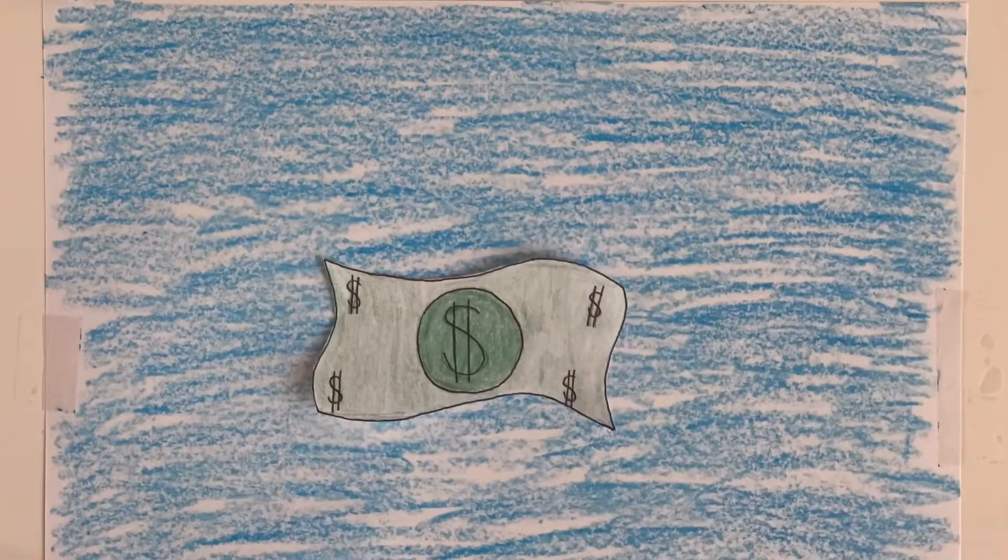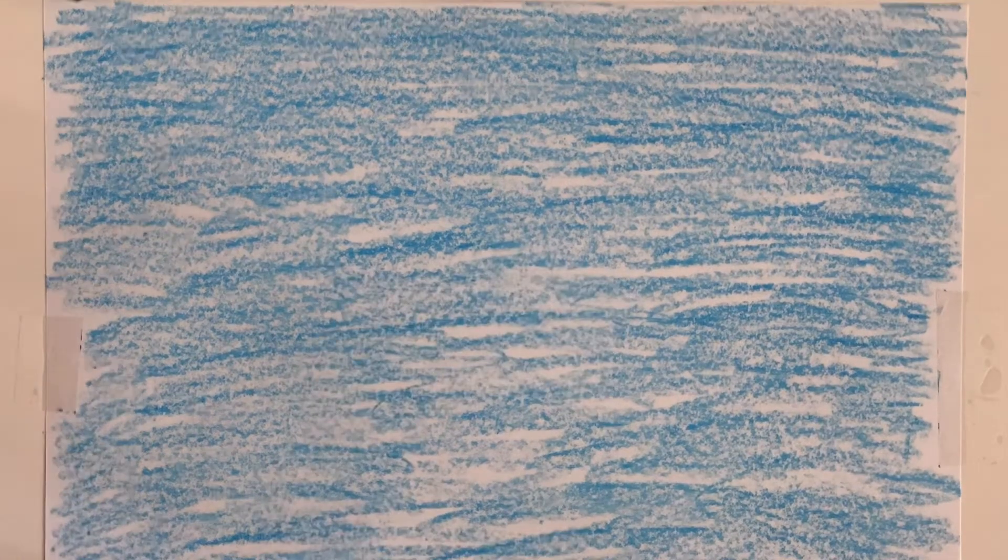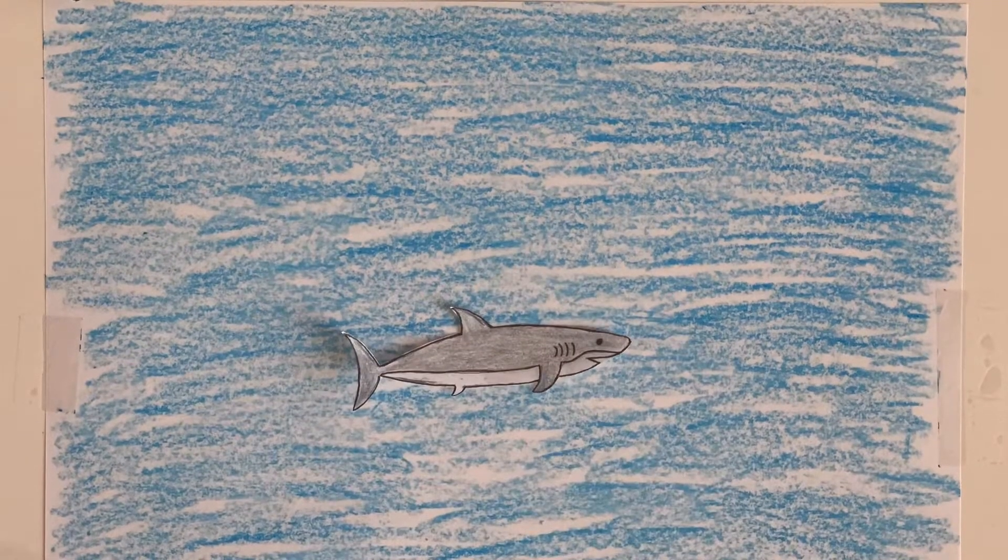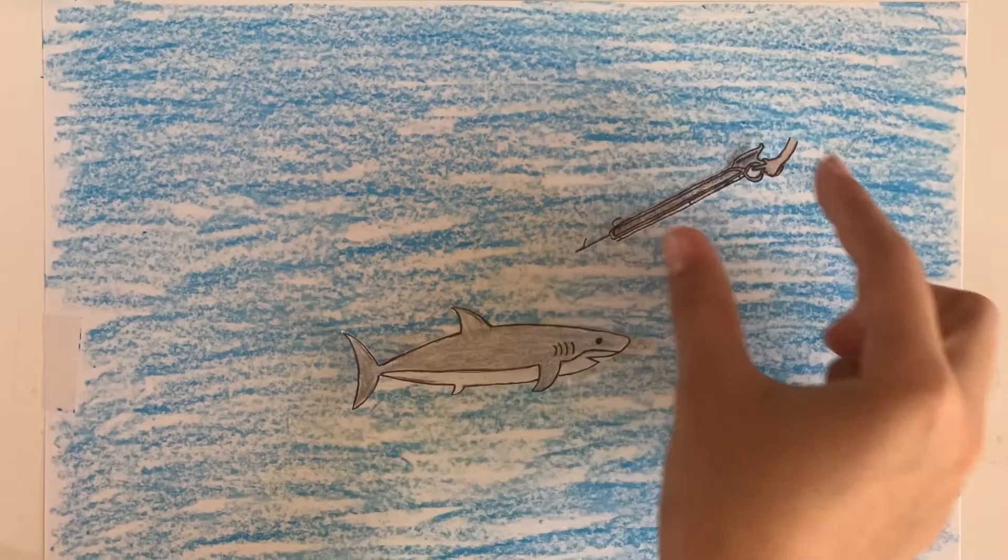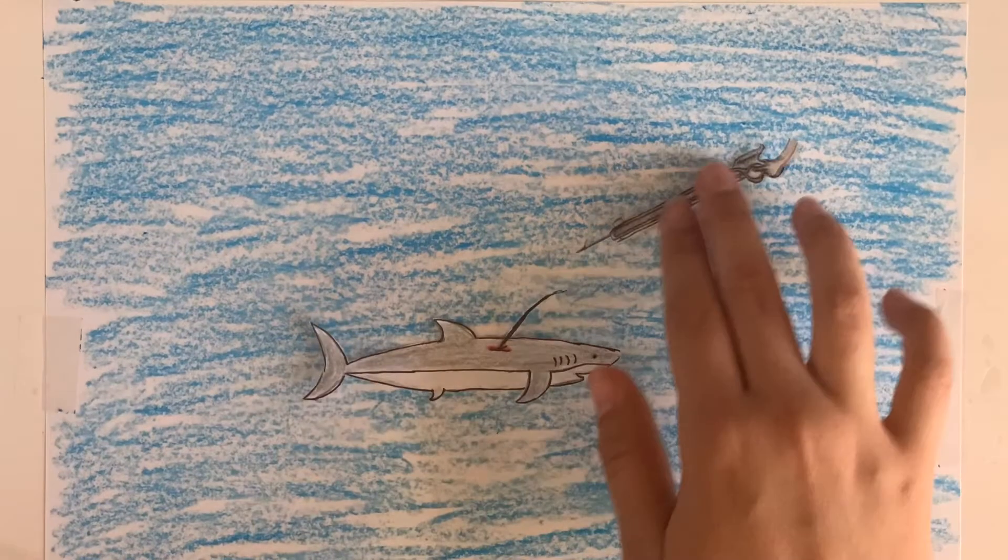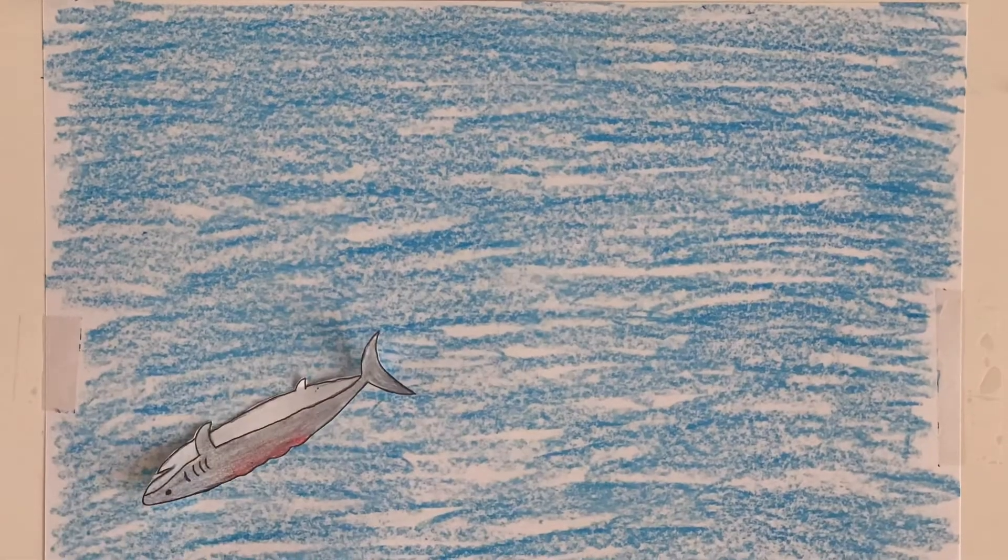Shark fins are one of the most expensive seafood products in the world. The practice of shark finning involves removing the fins of sharks and discarding the rest of the body that is still alive back into the ocean. The fins are the most valuable part of the shark, therefore fishermen do not want to take up room in their boats by keeping the entire shark as it holds less monetary value.